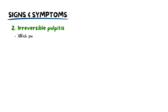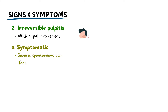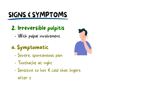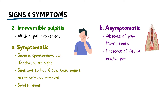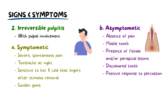Irreversible pulpitis is extremely symptomatic and is characterized by severe, spontaneous pain that can be worse at nighttime or when lying down. Patients may experience heightened sensitivity to pressure and even lingering pain after the stimulus is removed. Sometimes, though, there are no symptoms, meaning the diagnosis has likely progressed from irreversible pulpitis into necrosis where the tooth is basically dead.